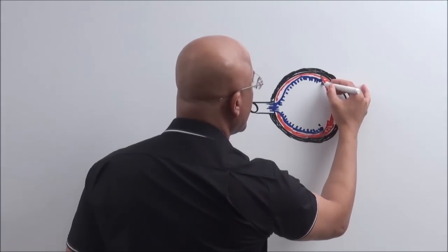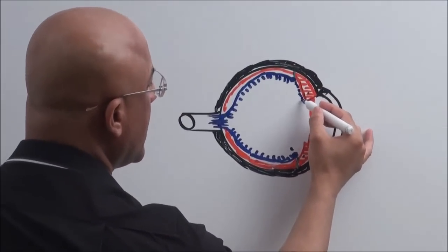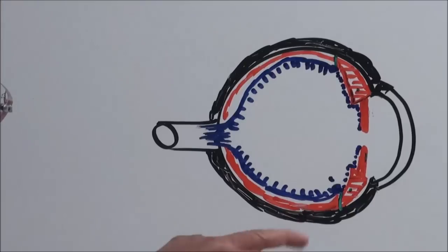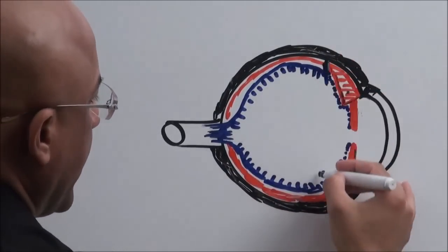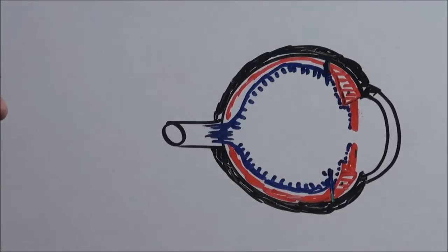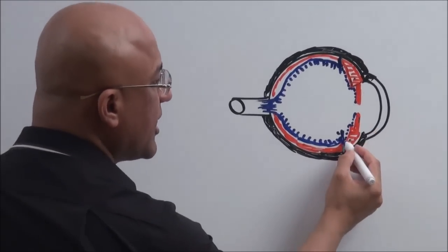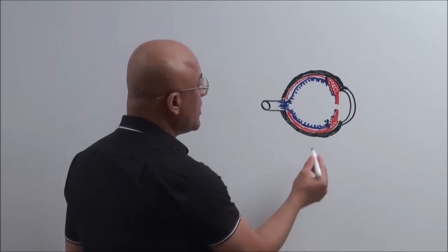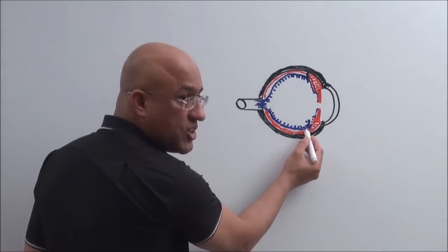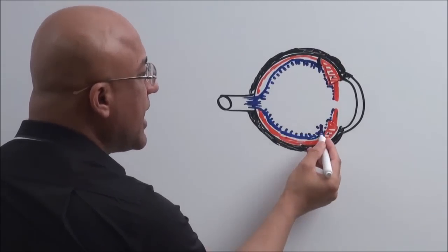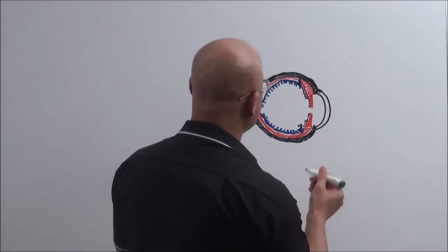The pigment layer of the retina moves forward and continues behind the iris and ciliary body. From the back up to the ora serrata, the retina is sensitive to light. Anterior to this point, the part of the retina that extends forward does not have rods and cones, so it is not sensitive to light. The point where the visual part of the retina abruptly terminates is called the ora serrata.